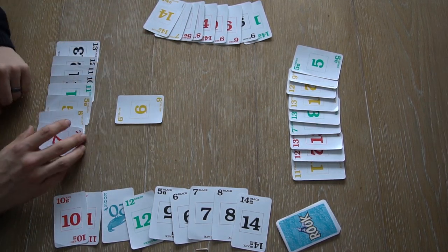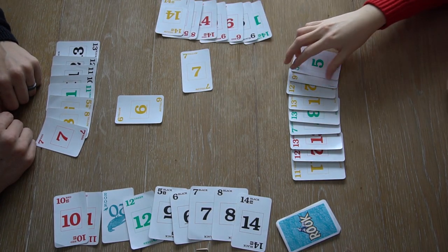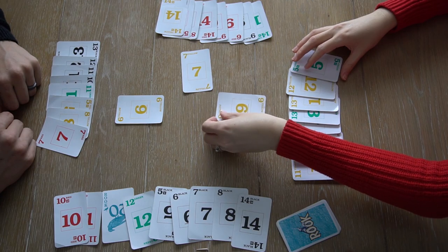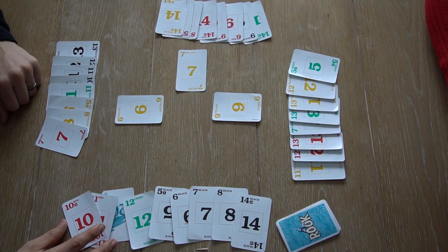Player 1 leads with a yellow 6. The rest of the players must now follow suit, meaning they must play yellow if they have it. Player 4 does not have any yellows, so he can play any card.